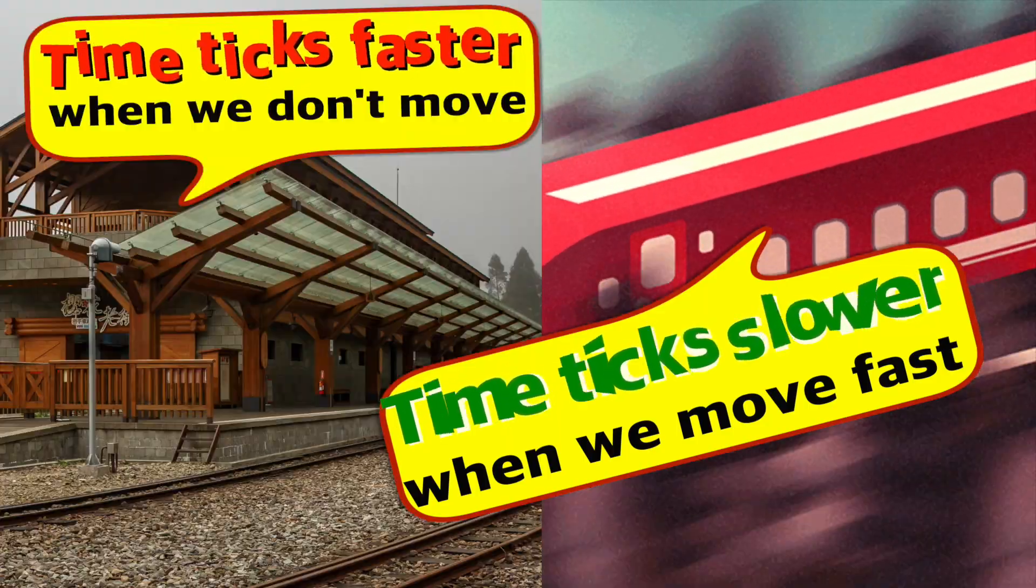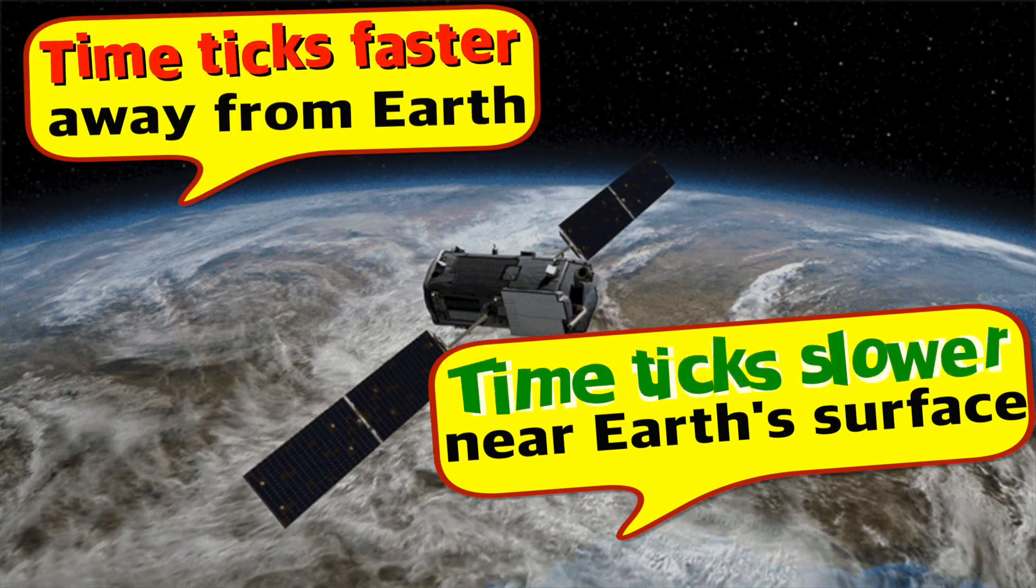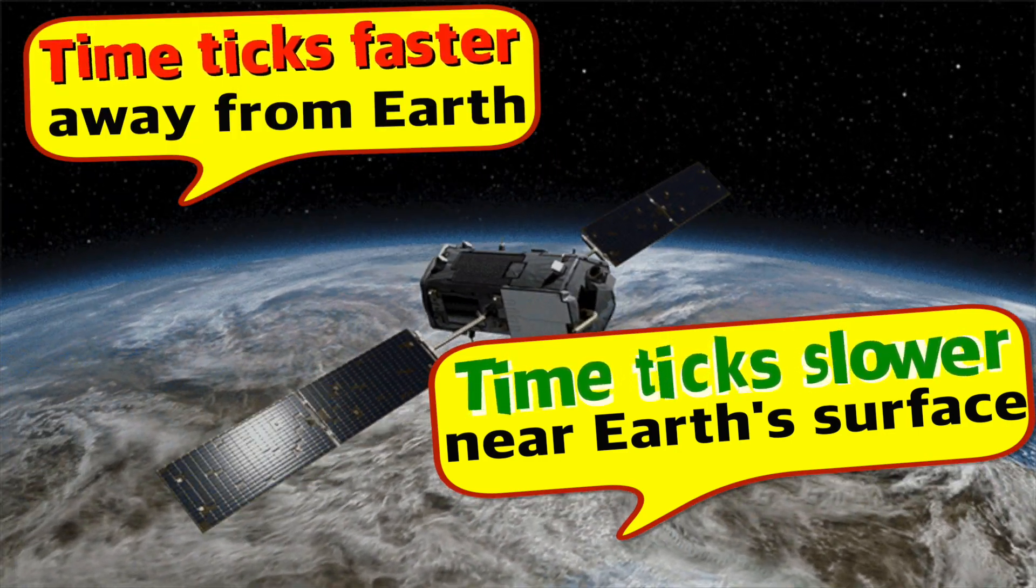If you want to age slower, move faster. So according to Newton, time doesn't change wherever you are in space. One second is one second. But Einstein says no, it actually changes. It depends on the speed at which you are going and also if you are near a massive thing or if you are away from a massive object.